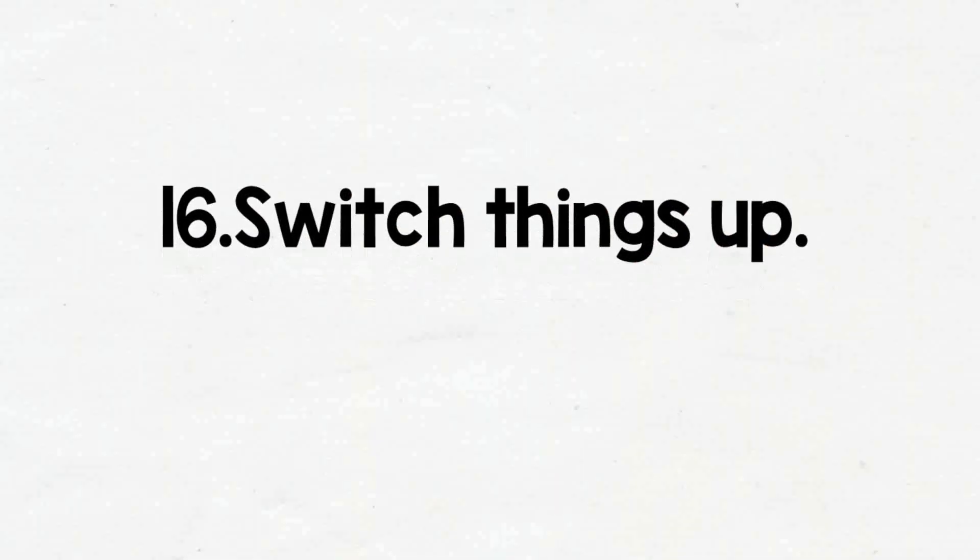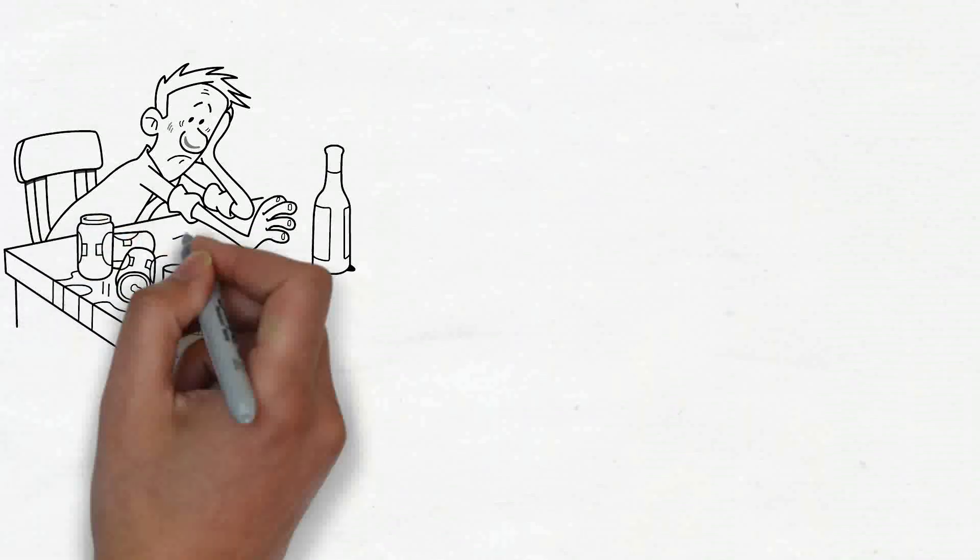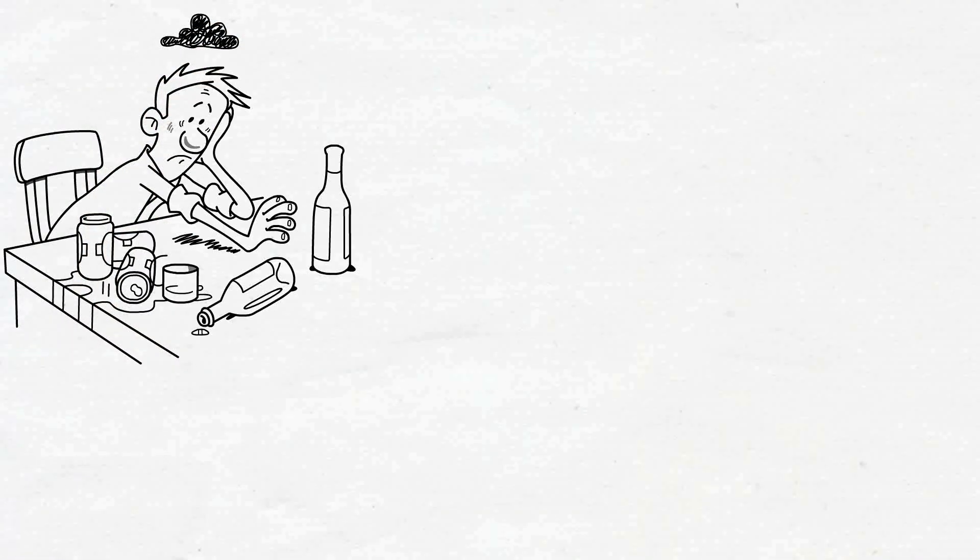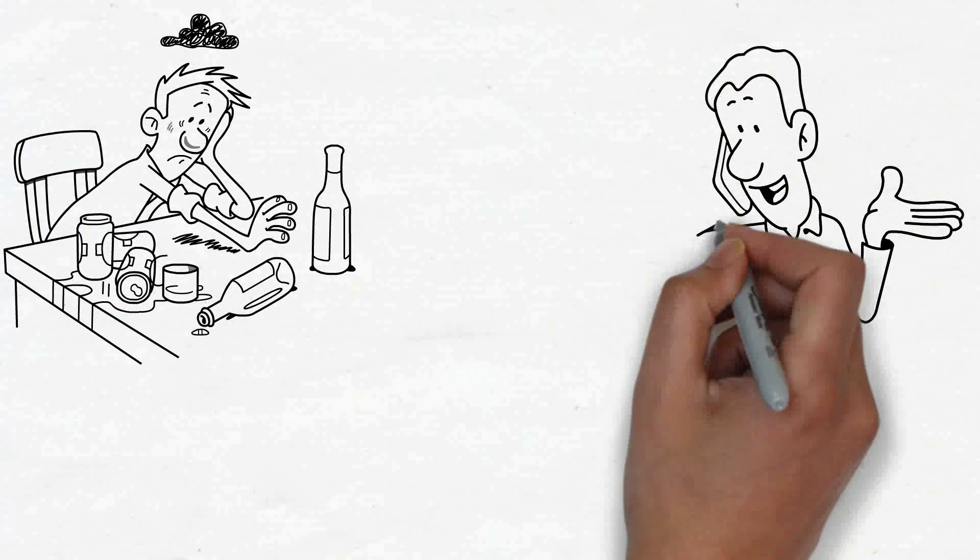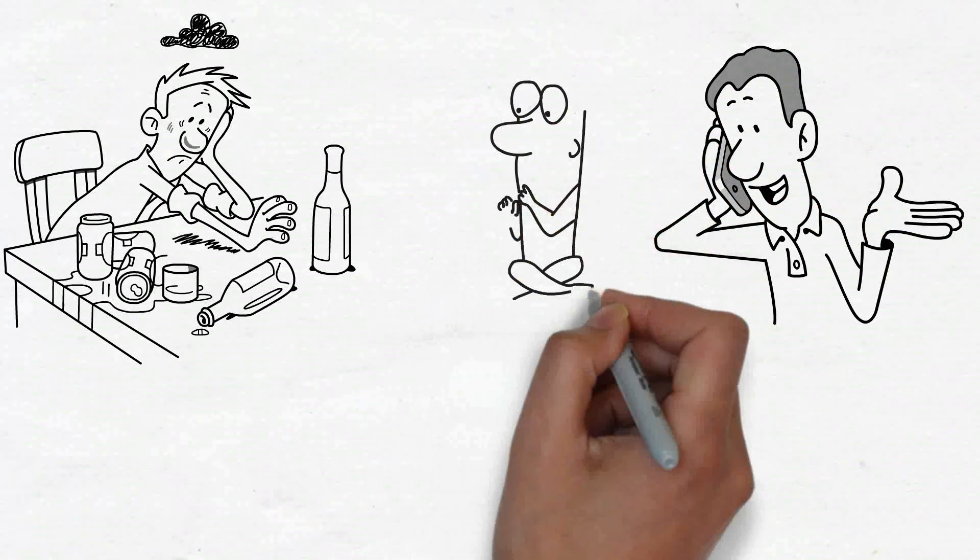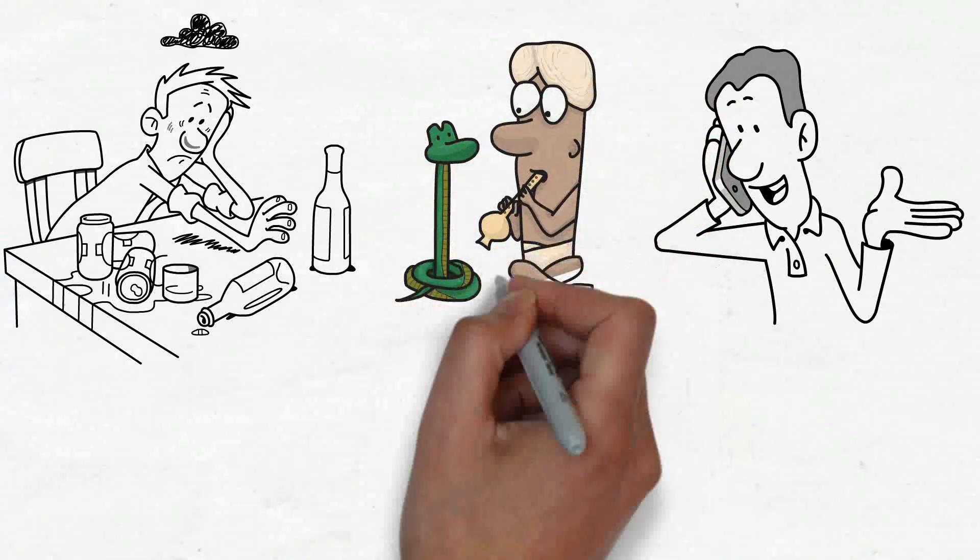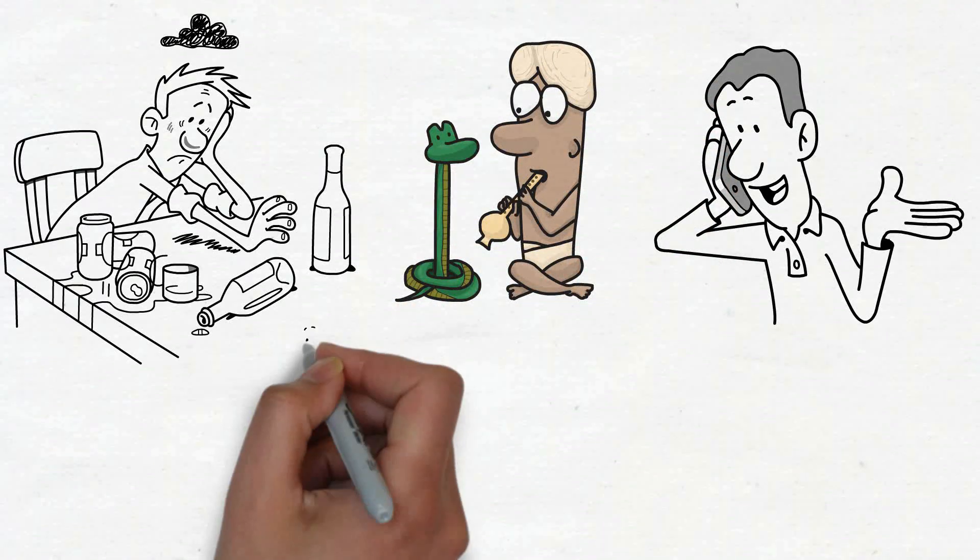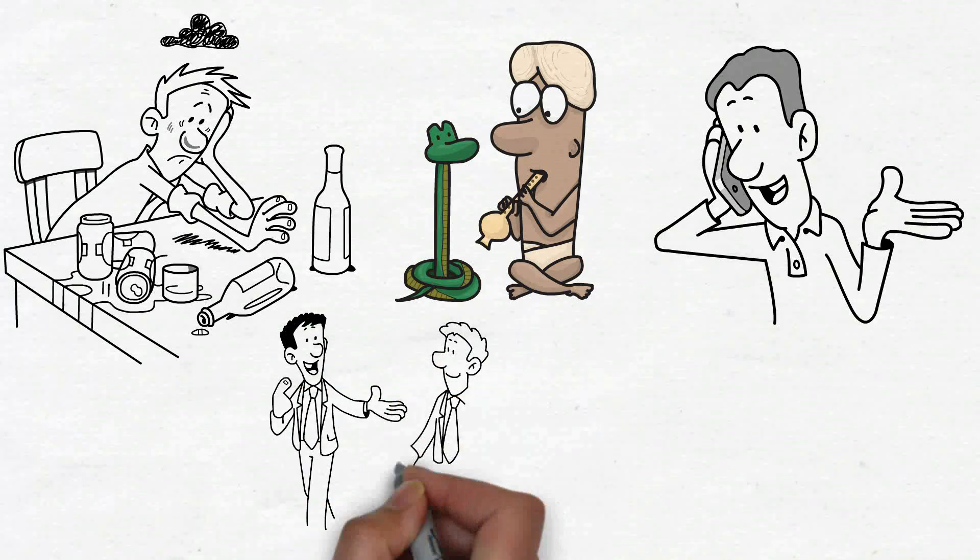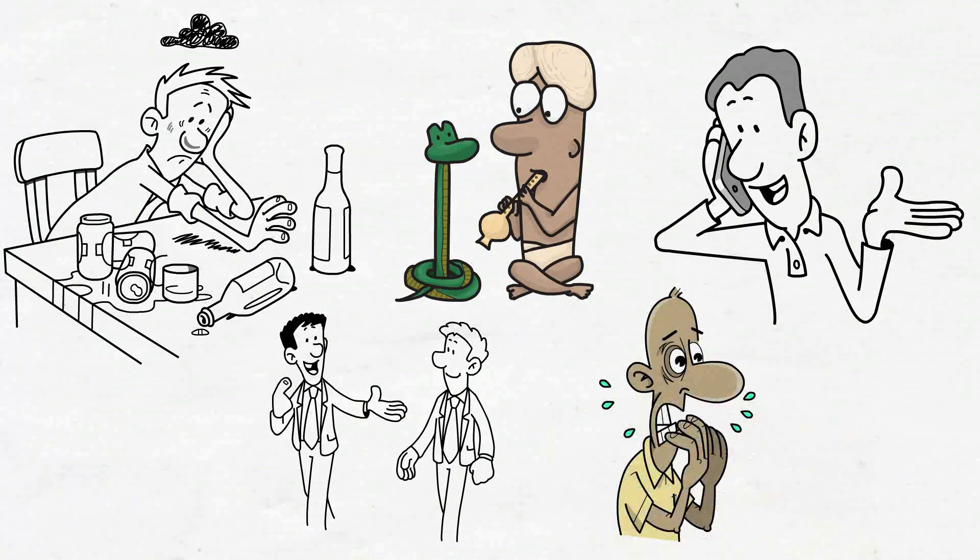16. Switch things up. Stop and find something else to do if you find yourself shopping while feeling irritated, anxious, or depressed. Take a stroll, turn on some music, or give a pal a call. You may prevent yourself from making such impulsive purchases to self-soothe by taking care of yourself in ways that don't cost money. Connect with your body and pay attention to how the things make you feel before making a purchase. Listen to your instincts if they're telling you not to buy something.